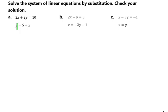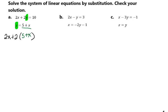Notice here that the y is by itself, which is going to allow us to take this 5 plus x and substitute it in for that y. So what we'll be doing is taking 2x plus 2 times, and in this place right here, we'll be putting our 5 plus x because that's what y equals.